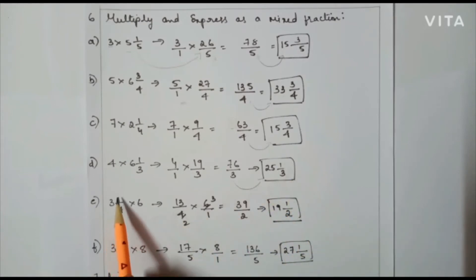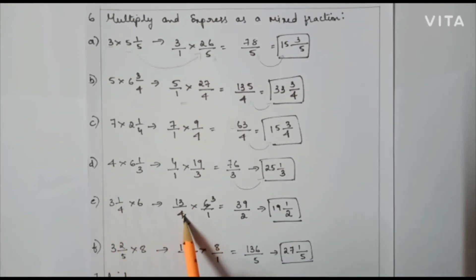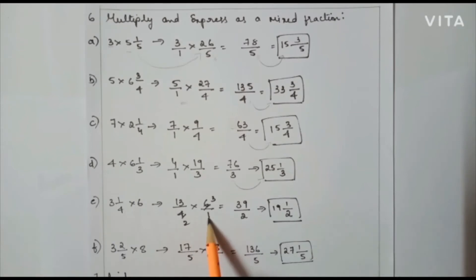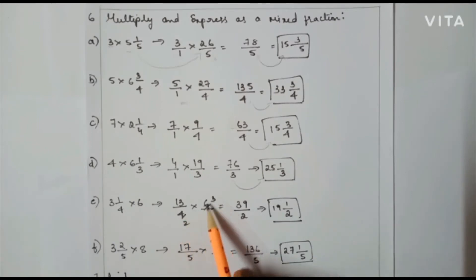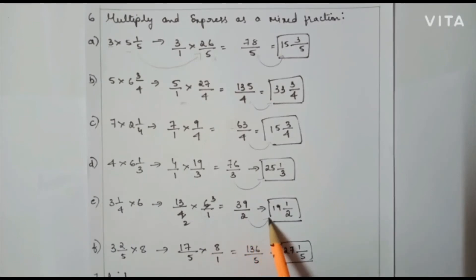Next one: 3(1/4) × 6. Convert the mixed fraction: 4×3=12, plus 1 = 13/4, so 13/4 × 6/1. Here I can cancel: 4 and 6 give 2 and 3. So 13 × 3 = 39, and 2 × 1 = 2, giving 39/2. Converting to a mixed fraction gives 19 and 1/2.